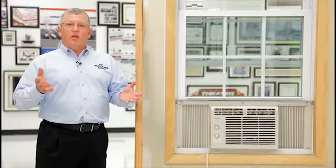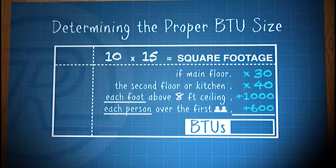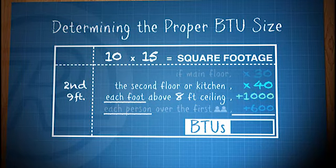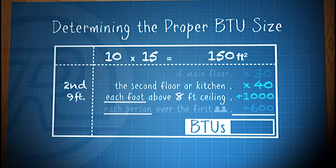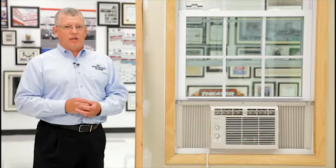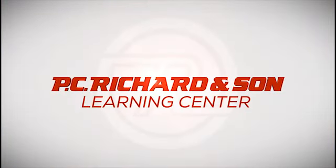For this example, we're going to use a room that's 10 by 15. It happens to be on the second floor with a 9-foot ceiling. A 10 by 15 room equals 150 square feet. It's on the second floor, therefore we'll multiply it by 40, giving us 6,000 BTUs. We mentioned that the ceiling height was 9-foot, so we want to add an additional 1,000 BTUs for a total of 7,000 BTUs.